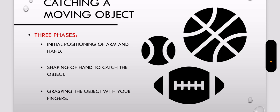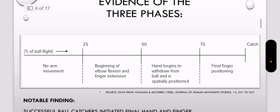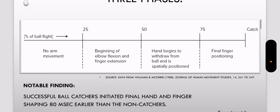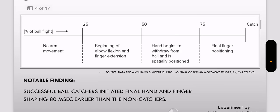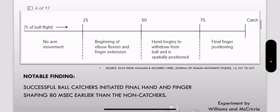These three phases are pretty much determined by the flight of the ball that you're looking at. It's basically just broken down into how far that ball is in its flight path. So at the start, right when the ball's thrown, that's where you start flexing your elbow, extending your fingers. Then about halfway through, that's when you start positioning.